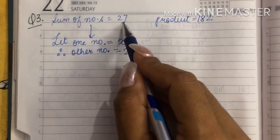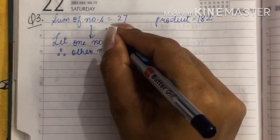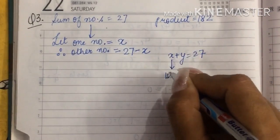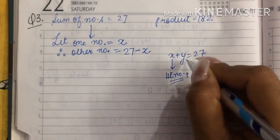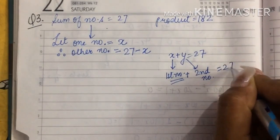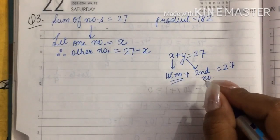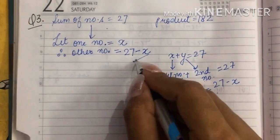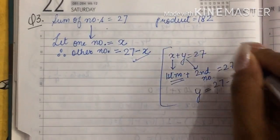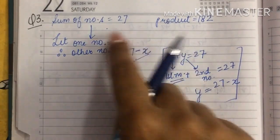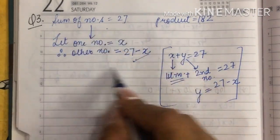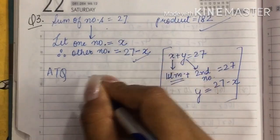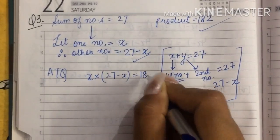There are two numbers whose sum is 27. You could think of it as x plus y equals 27, where x is the first number and the second number is 27 minus x. I have used this so I did not need to use a second variable. This can be done in rough work, then you write: I am going to use this to make my equation. According to the question, the product of the two numbers is 182.